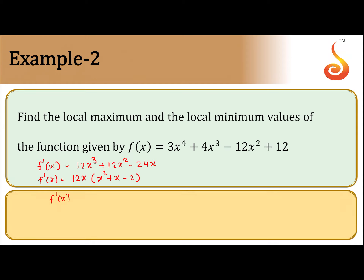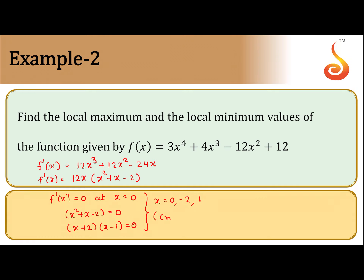Now f'(x) = 0 at x = 0, and the factors of x² + x − 2 = 0 can be written as (x + 2)(x − 1) = 0. So finally we got x = 0, x = −2, and x = 1. These are three critical points — the points where there are chances of maxima and minima.